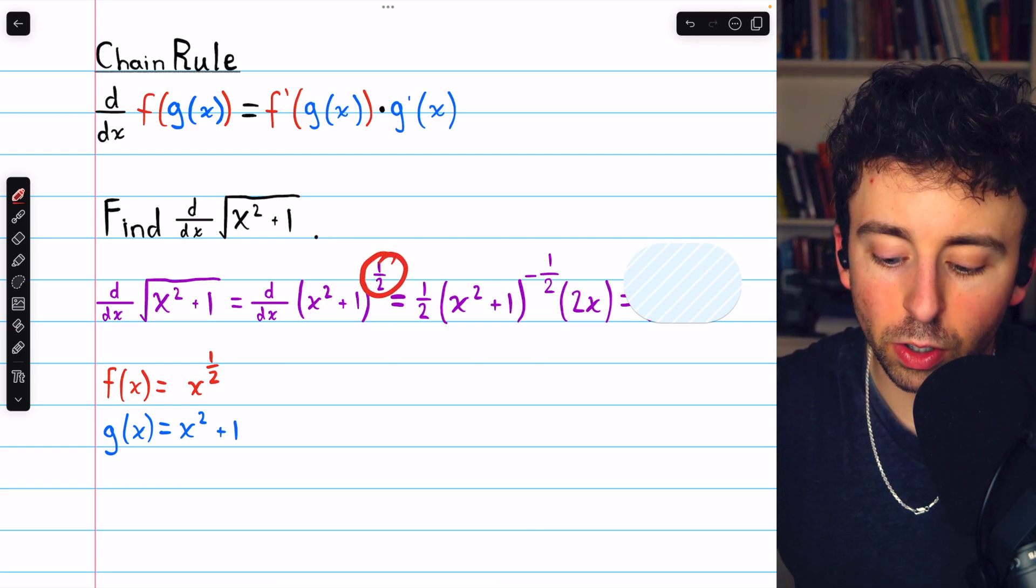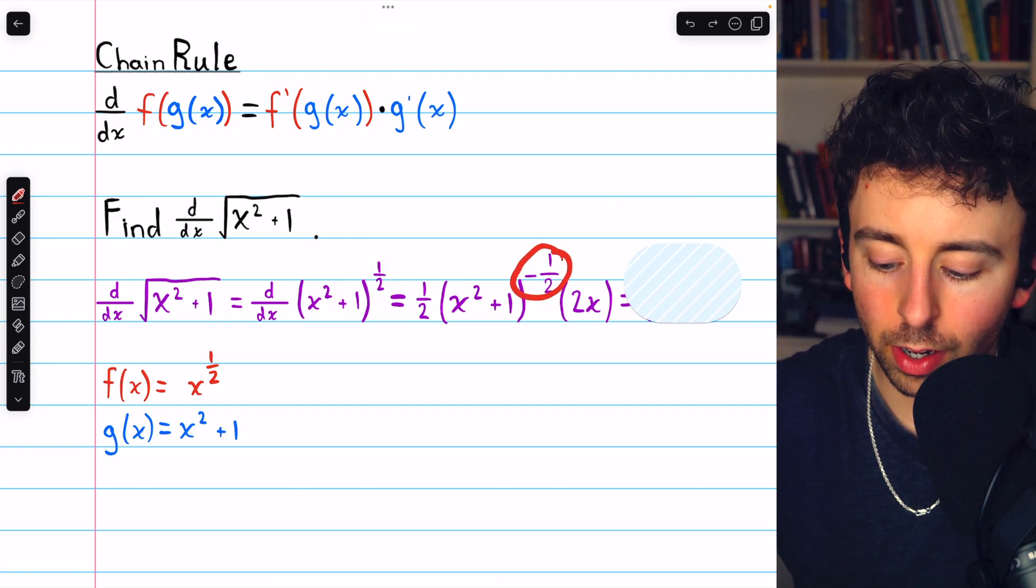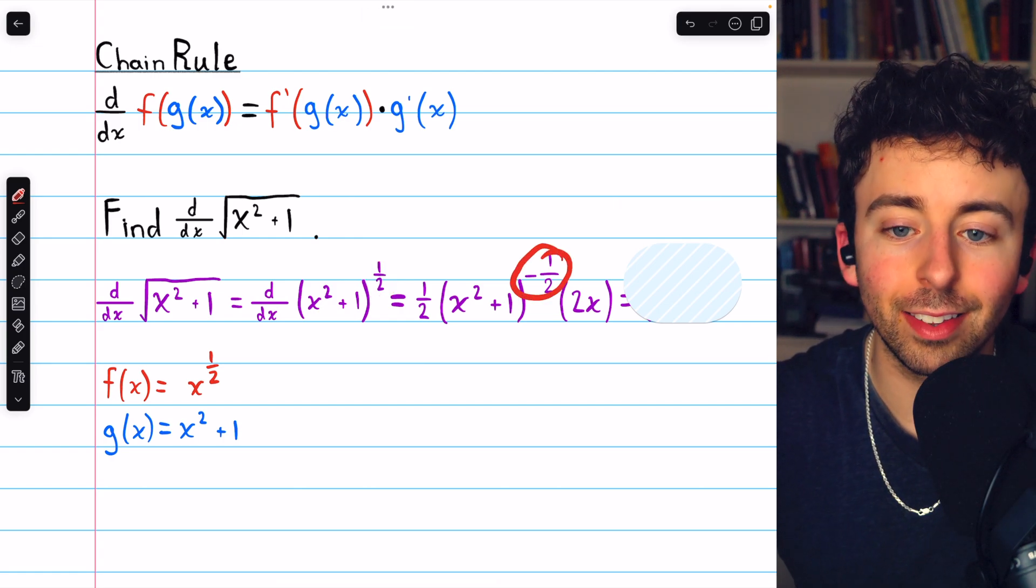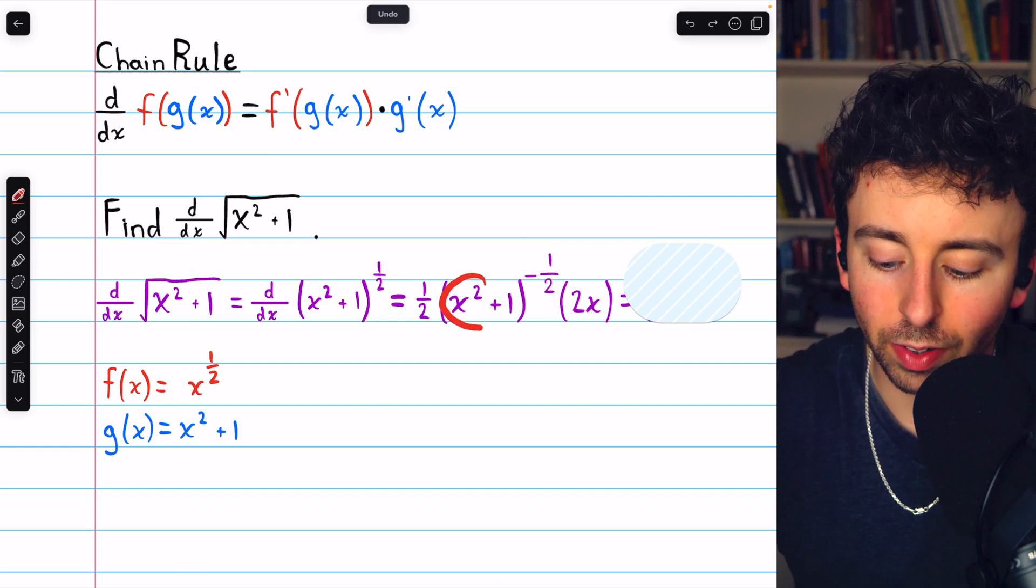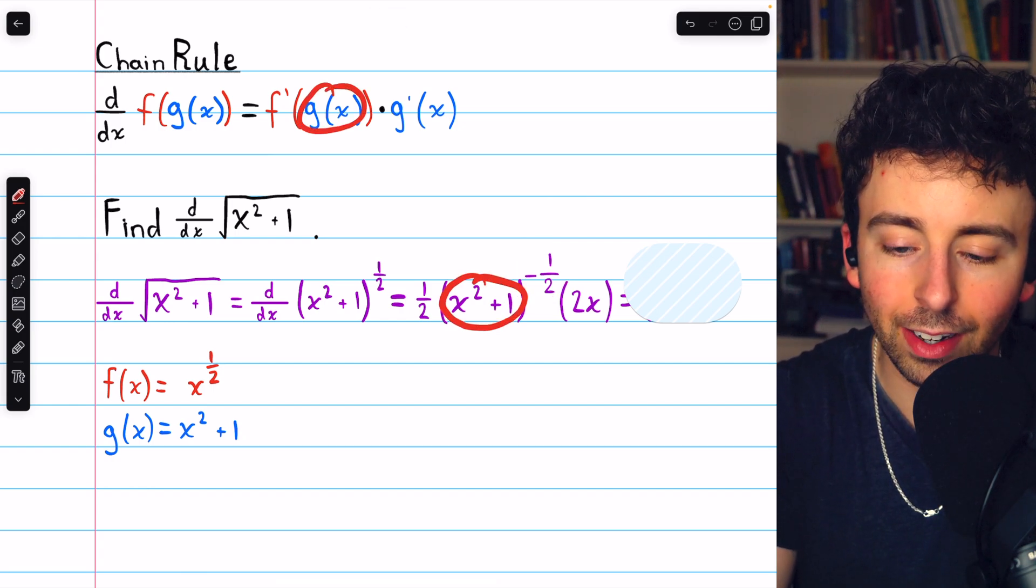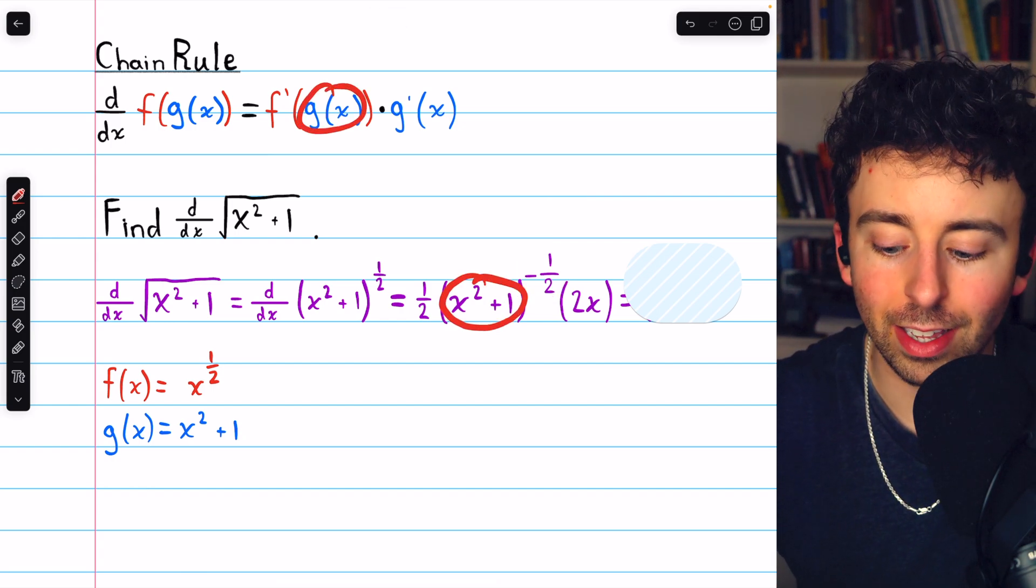But then we have to reduce the power by 1. 1 half minus 1 is negative 1 half, so that's the new power. And notice how we've left the inside function, g of x, unchanged. Don't change the inside function.